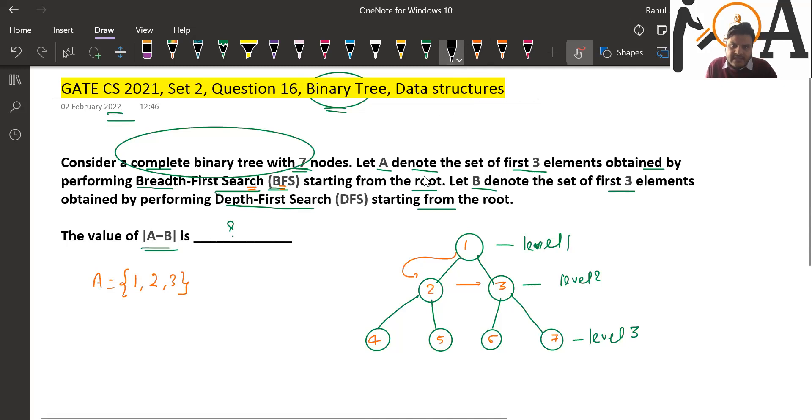Now if we see B, B is a set obtained by performing depth-first search, the first 3 elements. So the first 3 elements might be {1, 2, 4}. There is a possibility of {1, 2, 4}.